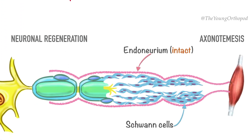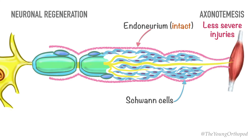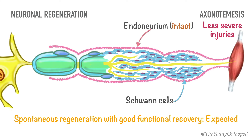The fate of the regenerating neuron and the final outcome depends on multiple factors. In less severe injuries without disruption of endoneurial and Schwann cell sheets, the axonal sprouts may pass readily along their former courses, and after regeneration the surviving cells innervate their previous end organs.